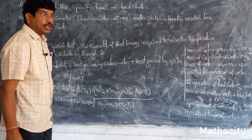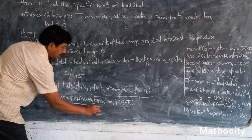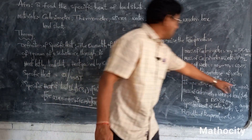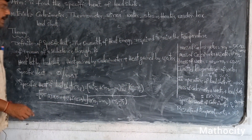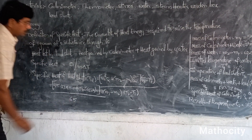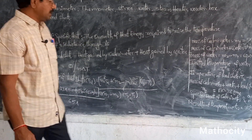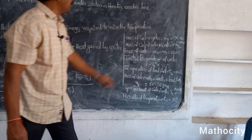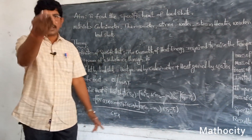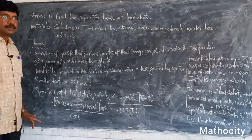35 minus 24 is 11 degrees. Divided by T2 minus T3: T2 is 100 degrees and T3 is 35 degrees, so 100 minus 35 equals 65. Into M3 minus M2: M3 is 130.38, minus M2 which is 55.33. That gives approximately 75.05 grams.